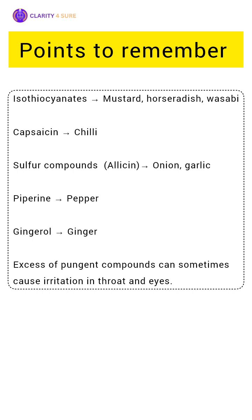In chilies, pungency comes from capsaicin, an alkaloid stored in the placenta of chili fruits. Onions and garlic get their sharp flavor from sulfur compounds like allyl propyl disulfide and allicin, released when cells are crushed. In black pepper, the pungent taste comes from piperine, another alkaloid. Ginger owes its spicy flavor to gingerol, a phenolic compound.